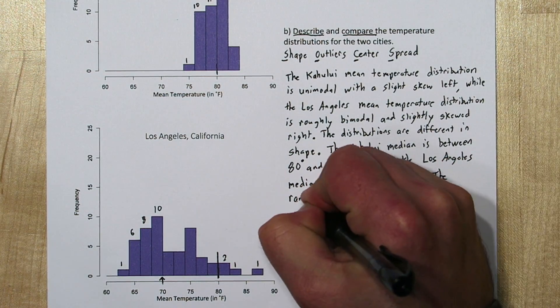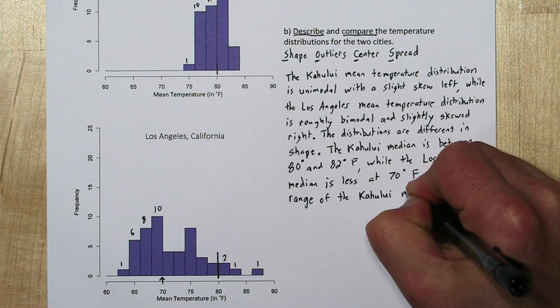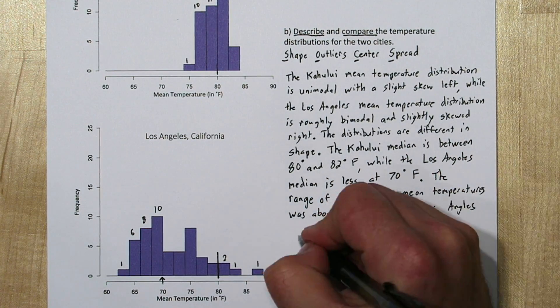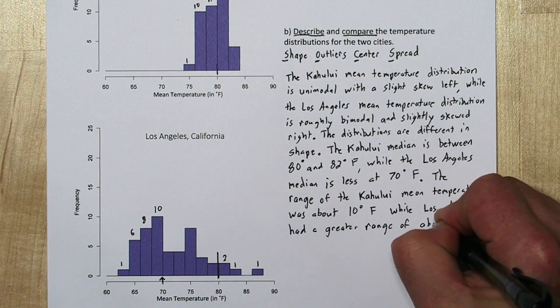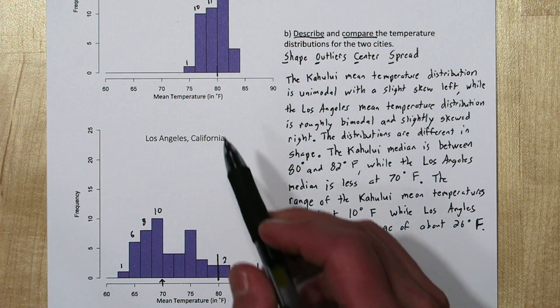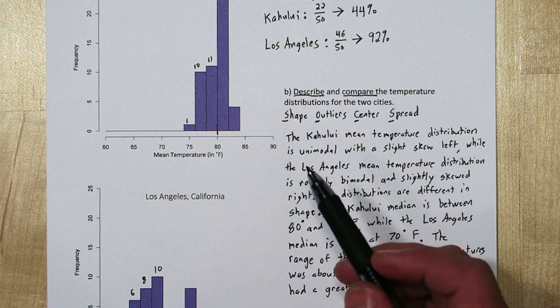For spread, we're going to talk about the range. We'll say the range of Kahului mean temperatures was about 10 degrees Fahrenheit, while Los Angeles had a greater range of about 26 degrees Fahrenheit. To get the range, you take the maximum value and subtract out the minimum value.